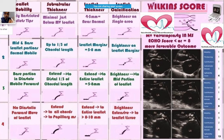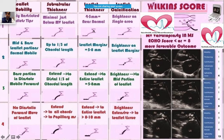Now, how do you grade those four parameters? You grade them into four grades each. For leaflet mobility, grade 1 is when it is minimally restricted only at the tip. You can see this clearly in the slides. Sometimes restriction extends to the mitral valve leaflet, sometimes up to four to five millimeters. Calcification appears as brightness on a single area.